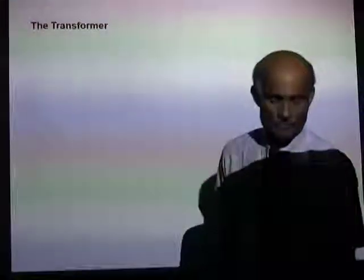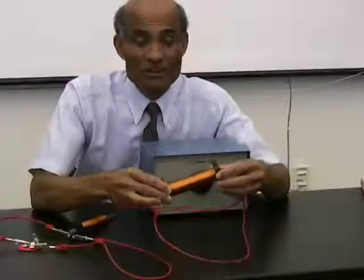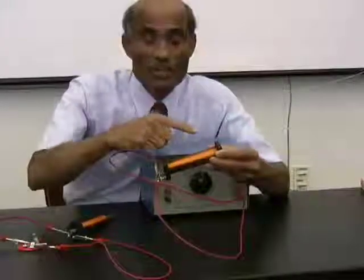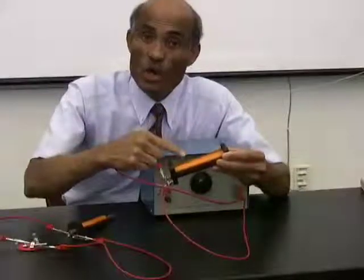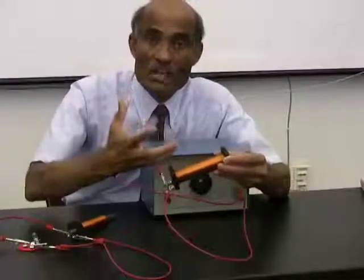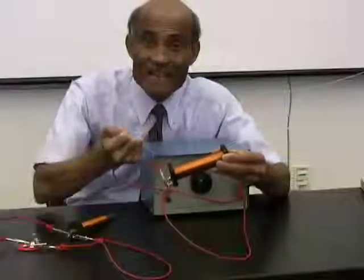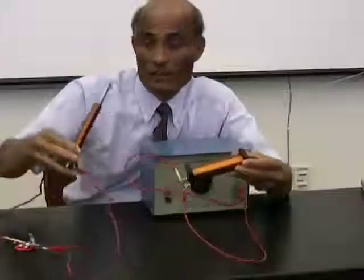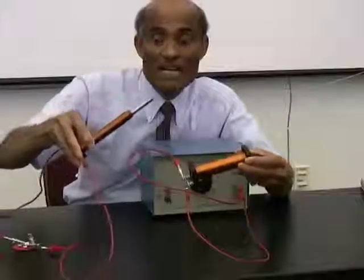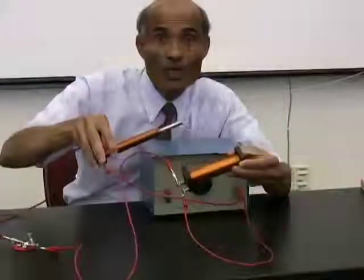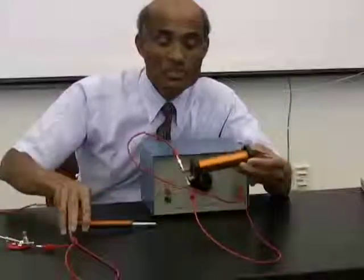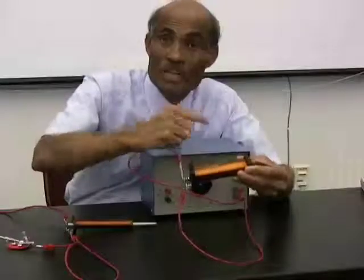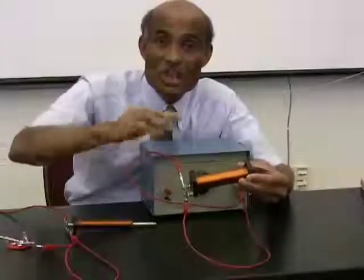We will now see another application of electromagnetic induction. In the last lesson, we saw that if the current in a coil of wire is either growing or decaying, the associated change in magnetic flux can induce an EMF in another coil of wire. Now, what happens if we allow AC to pass through this coil?